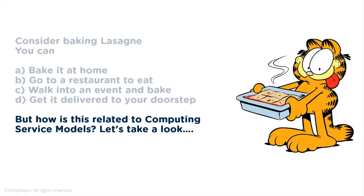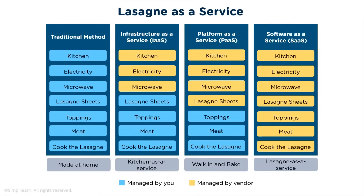How is this related to cloud computing? We have four boxes: the traditional method, Infrastructure as a Service, Platform as a Service, and Software as a Service. In the traditional method, everything is managed by us — kitchen, electricity, microwave, lasagna sheets, toppings, meat, and cooking. In IaaS, the main kitchen appliances are managed by the vendor. In PaaS, the infrastructure and main ingredient are managed by the vendor. In SaaS, everything from infrastructure to the end product is managed by the vendor.